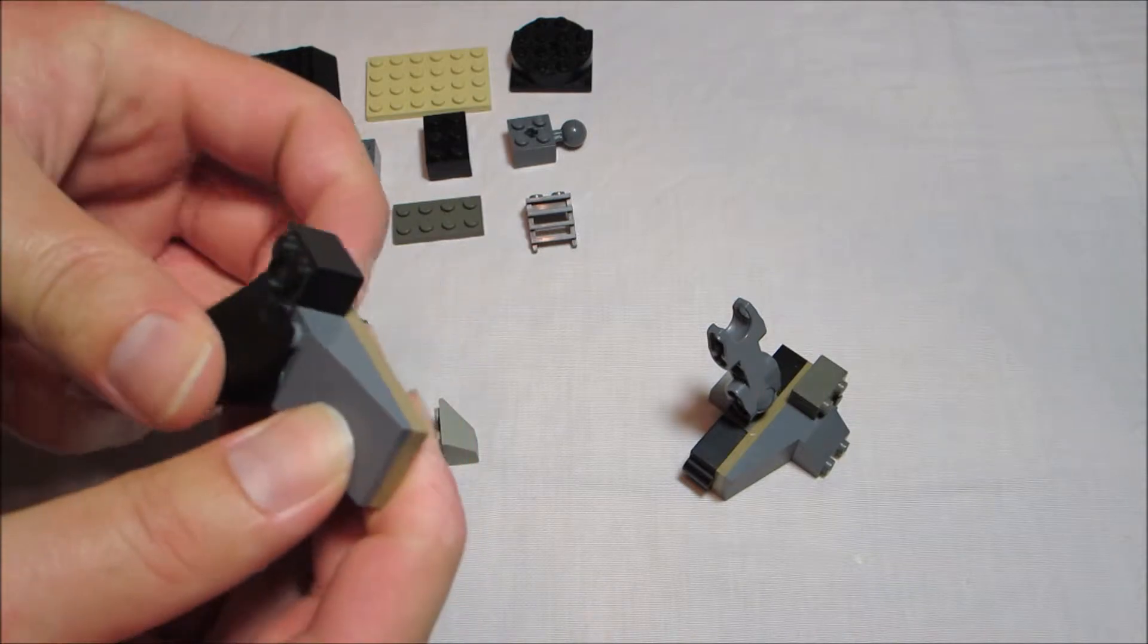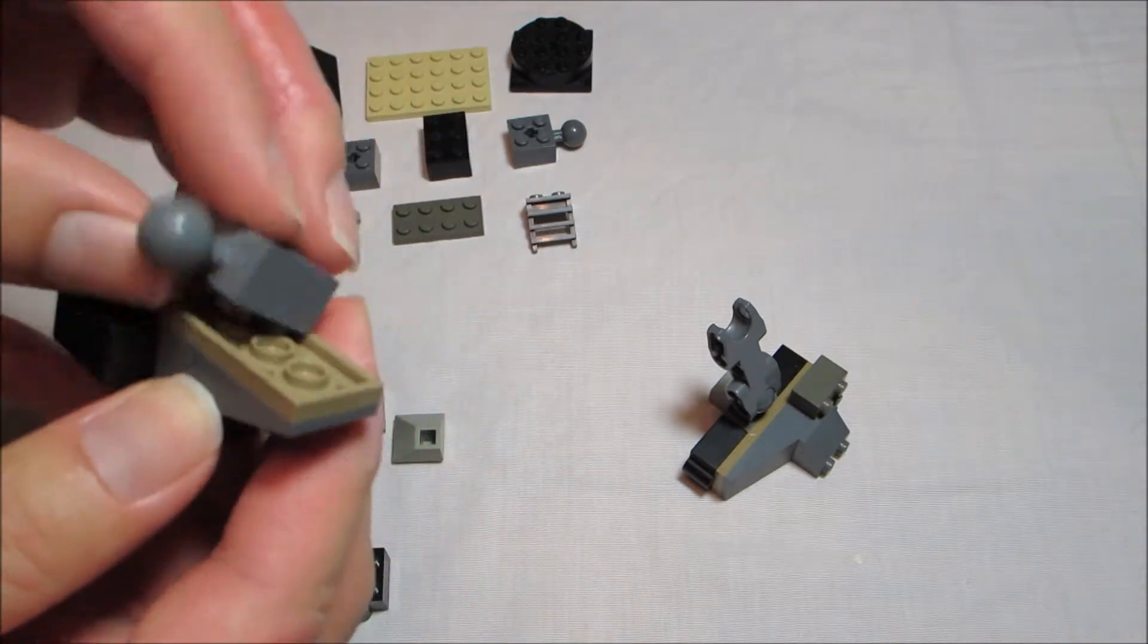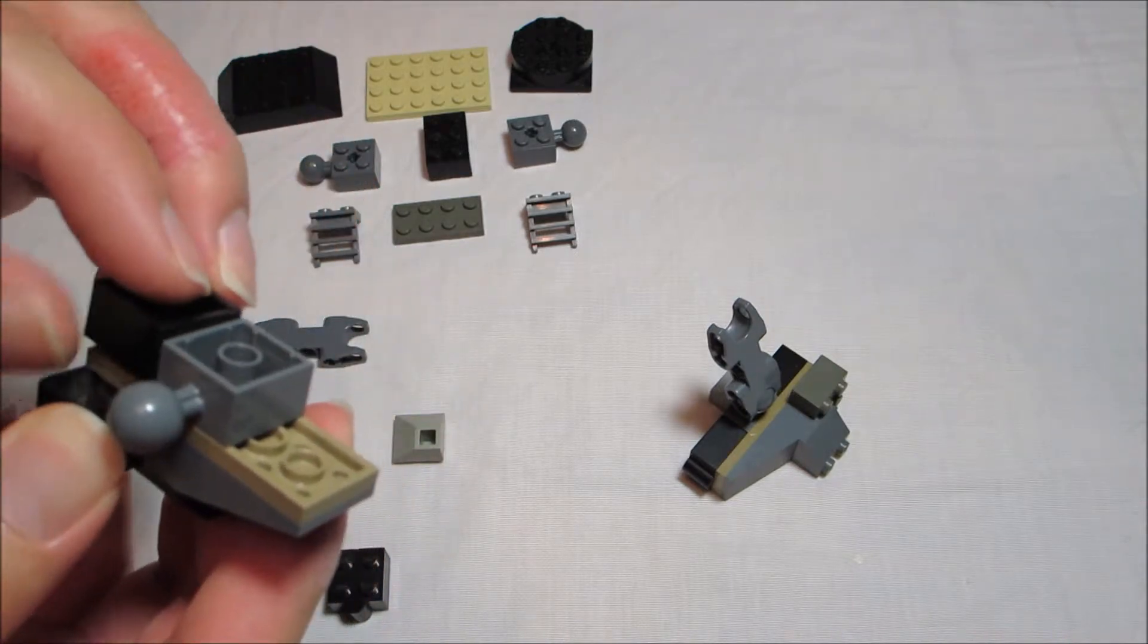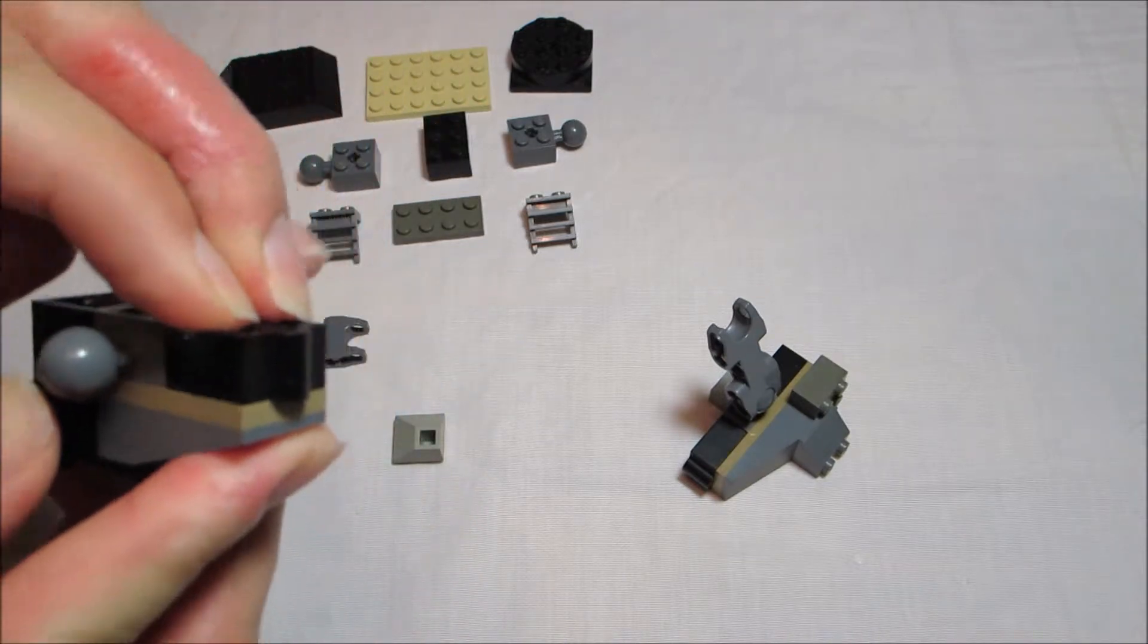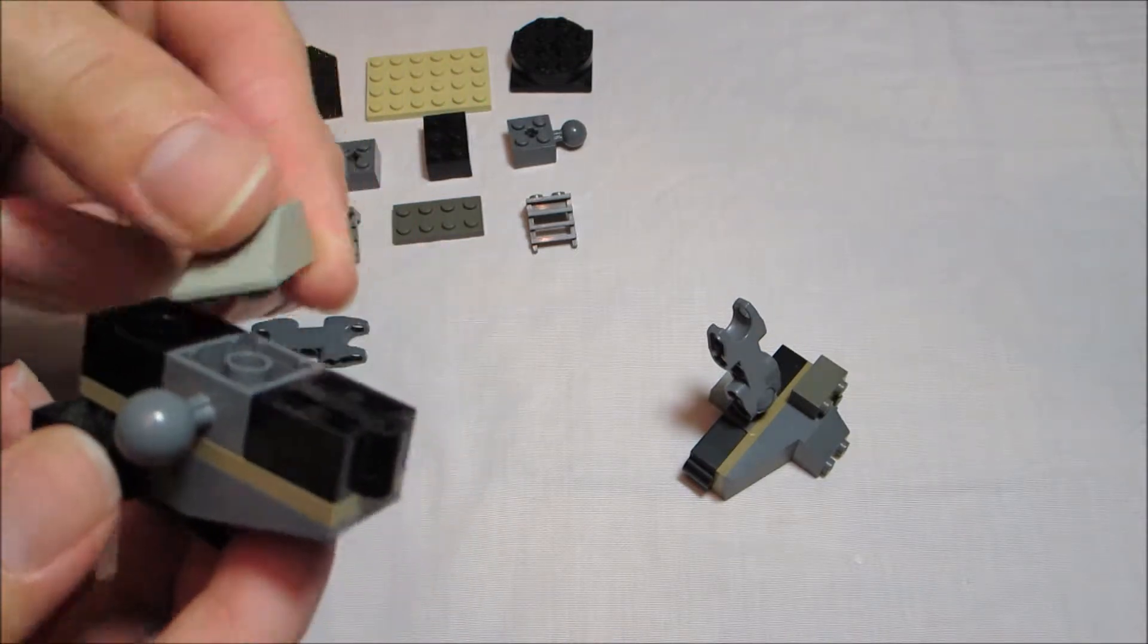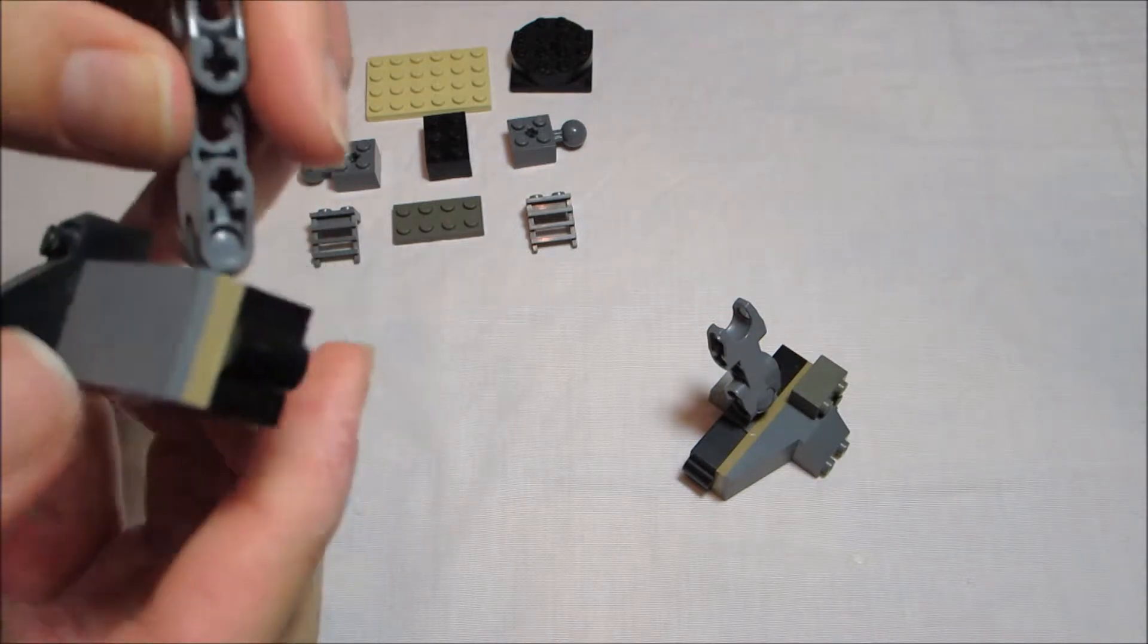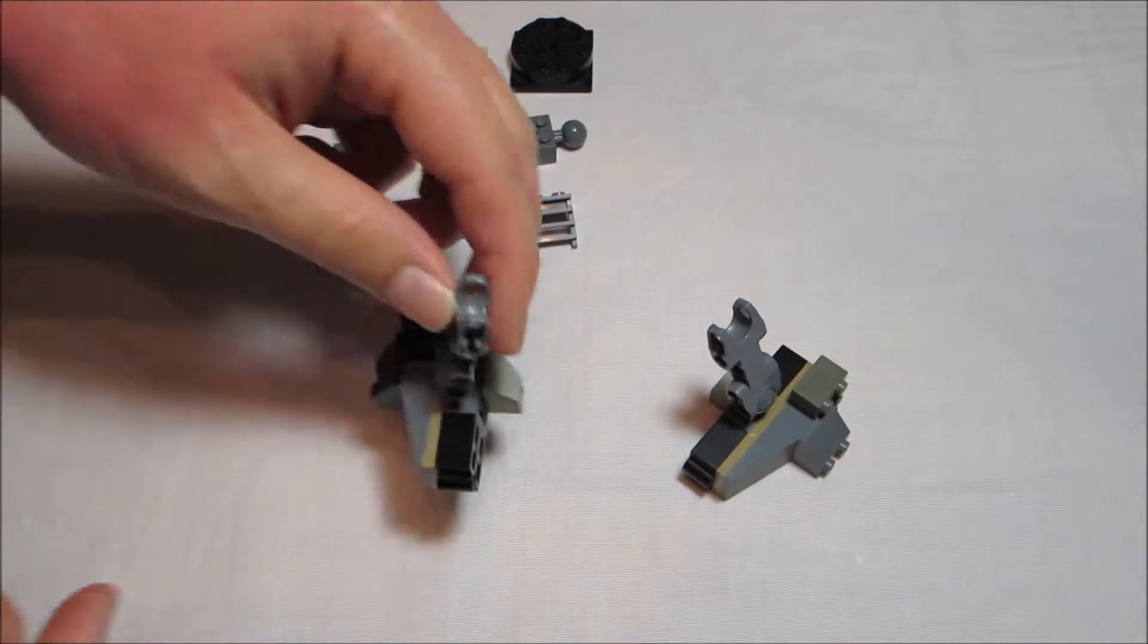So we're going to start with this long slanted part and go on the 1x6 plate. We're going to put the 2x2 brick with the ball on the bottom. Another regular 2x2 brick. This is a 1x1 with a joint hinge. So that's the first leg completed.